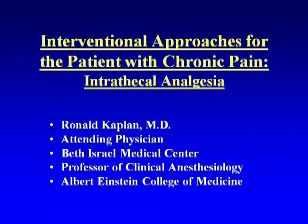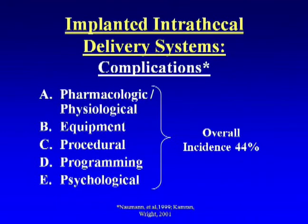We're going to talk about interventional approaches for the patient with chronic pain, specifically intrathecal analgesia. What I'd like to look at primarily are problems associated with intrathecal delivery systems and problems associated with intrathecal analgesia. The overall incidence of complications with neuroaxial analgesia is about 44%, comprising pharmacologic and physiological problems, equipment problems, procedural problems, programming, and psychological issues.